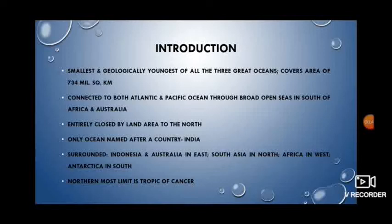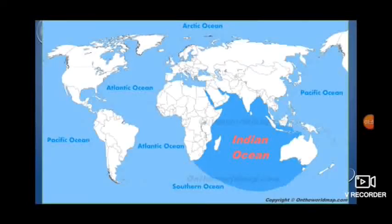It is the only ocean that has been named after the country India, as the country almost forms the head of the ocean. The Indian Ocean is bounded by the southern parts of Asia in the north, Indonesia and Australia in the east, and Africa in the west. To the south, there is the Antarctic coast. The Tropic of Cancer forms the northernmost limit of the Indian Ocean.